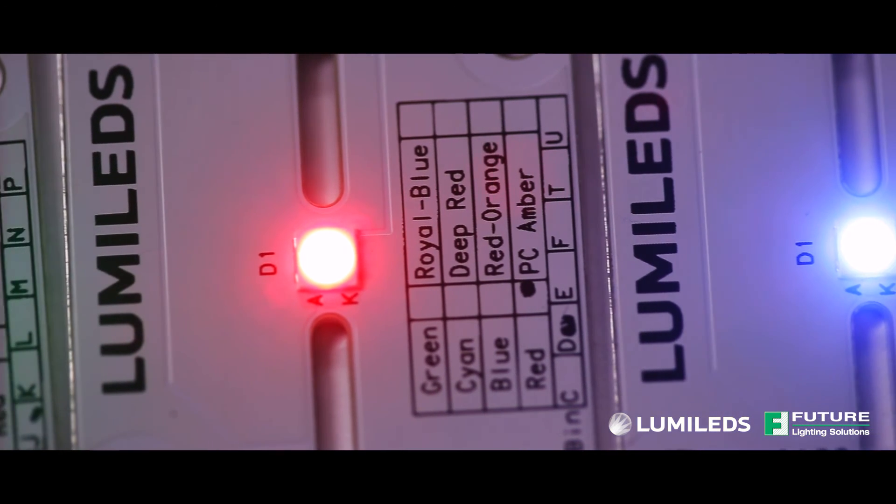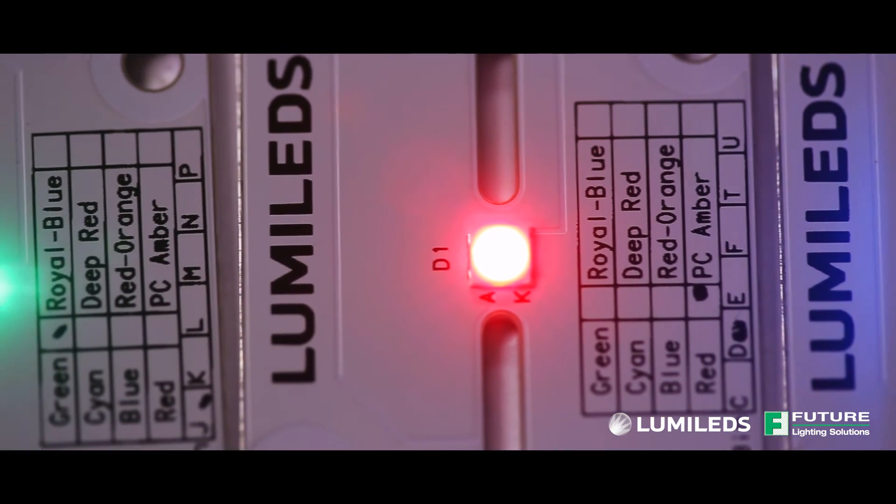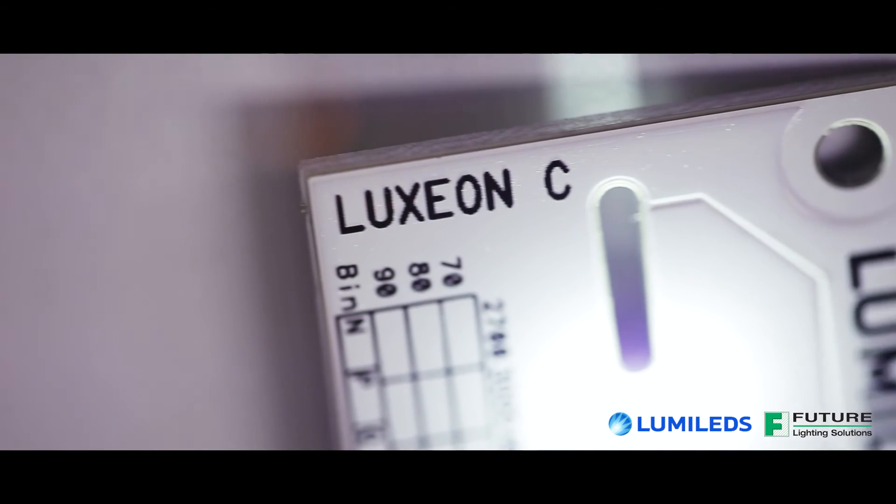Finally, Luxion C's short dome design minimizes crosstalk in densely packed arrays. This aids in color mixing, prevents unwanted fluorescence of phosphors, and boosts overall efficiency.